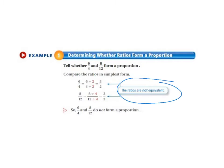So those ratios are not equivalent. So 6 fourths and 8 twelfths do not form a proportion. There is a quick and easy way to do this which is shown later in the lesson. But you know how to do equivalent fractions. So you know how to do this already.